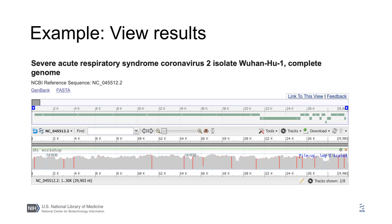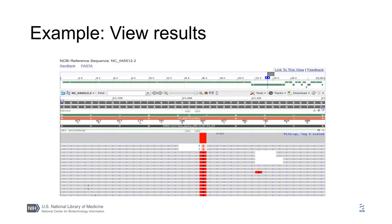The red bars show locations of differences between the reads and the reference. The fact that these are straight, long lines indicates that these are changes in the sequence genome. Zooming into one of these differences, we can see that adenine in the reference is replaced with guanine, and the codon coding for aspartic acid in the reference codes for glycine in the sequenced genome.